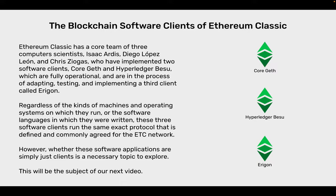The blockchain software clients of Ethereum Classic. Ethereum Classic has a core team of three computer scientists — Isaac Ardis, Diego Lopez Leon, and Chris Ziogas — who have implemented two software clients, CoreGeth and Hyperledger Besu, which are fully operational, and are in the process of adapting, testing, and implementing a third client called Eragon. Regardless of the kinds of machines and operating systems on which they run, or the software languages in which they are written, these three software clients run the same exact protocol that is defined and commonly agreed for the ETC network. However, whether these software applications are simply just clients is a necessary topic to explore, and this will be the subject of our next video.